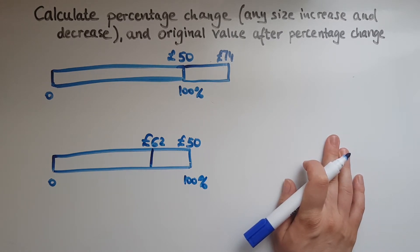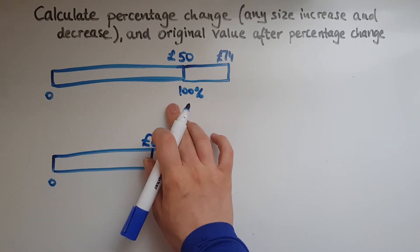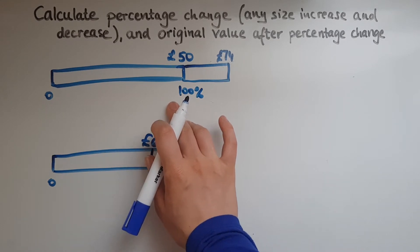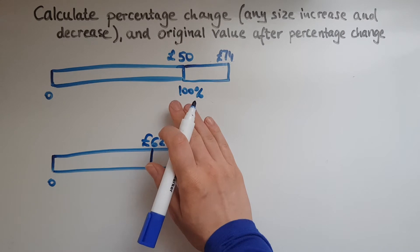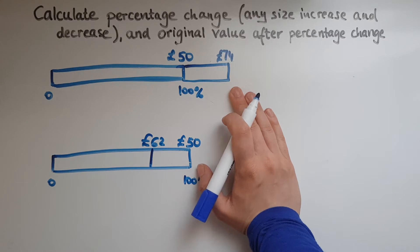Let's suppose that the original price of a coat was 50 pounds, or a pair of shoes, whatever you might think of. Then that price goes up to 74 pounds. So what is the percentage change?